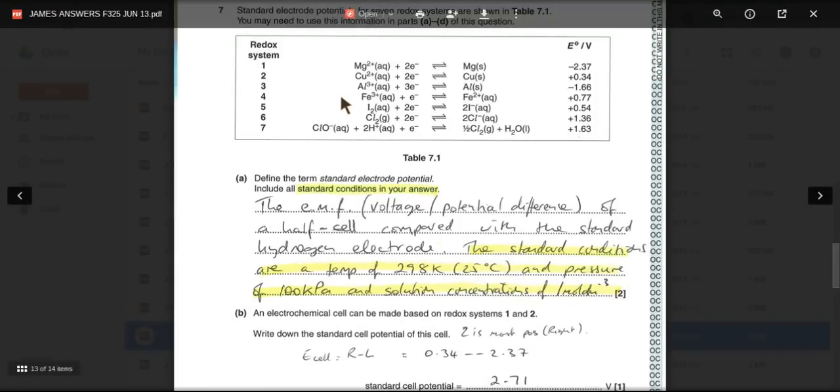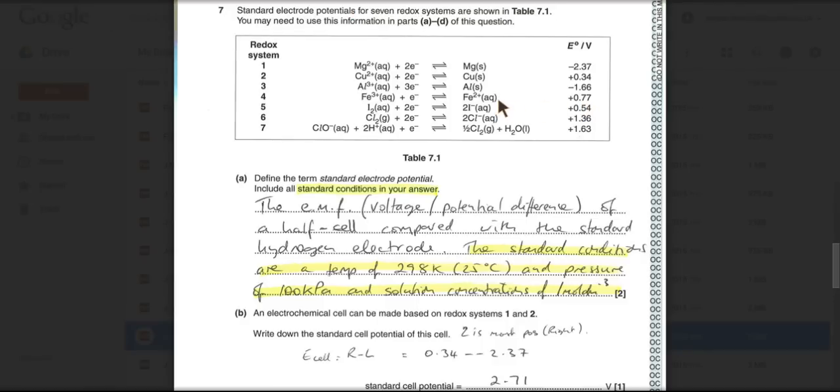So 3 and 4, we've got minus 1.66 versus 0.77. So that's the more positive one, which means that the iron half equation runs forwards. The aluminium one runs in reverse. And just be careful with electrons. We'd need to treble this one out. So we'd have 3 of everything in here to get those electrons to cancel. So the equation is going to be 3 of those plus 1 of those gives 3 of those and 1 of those.